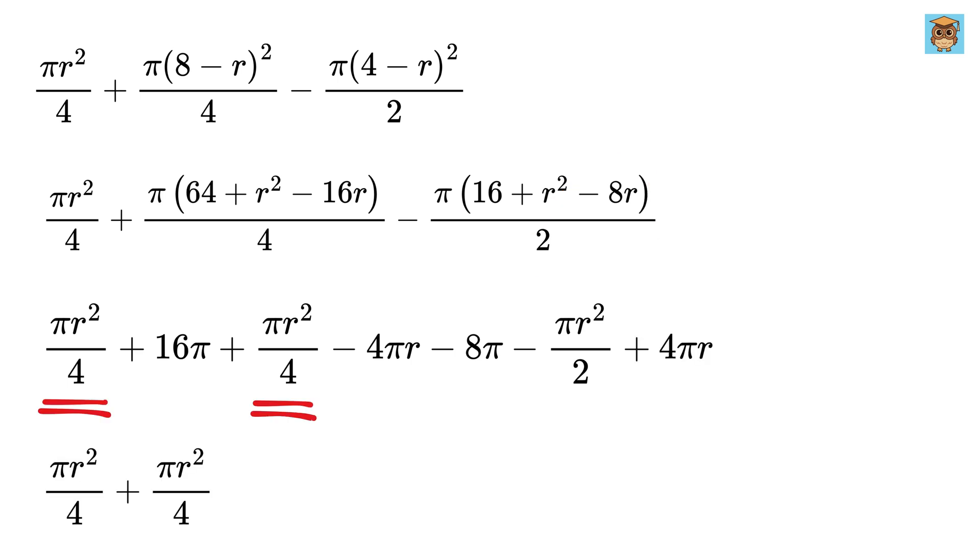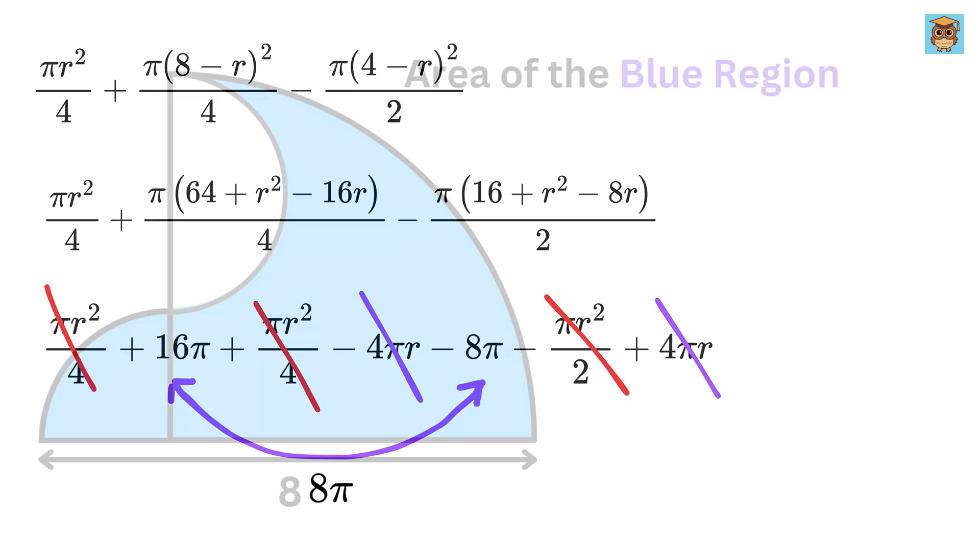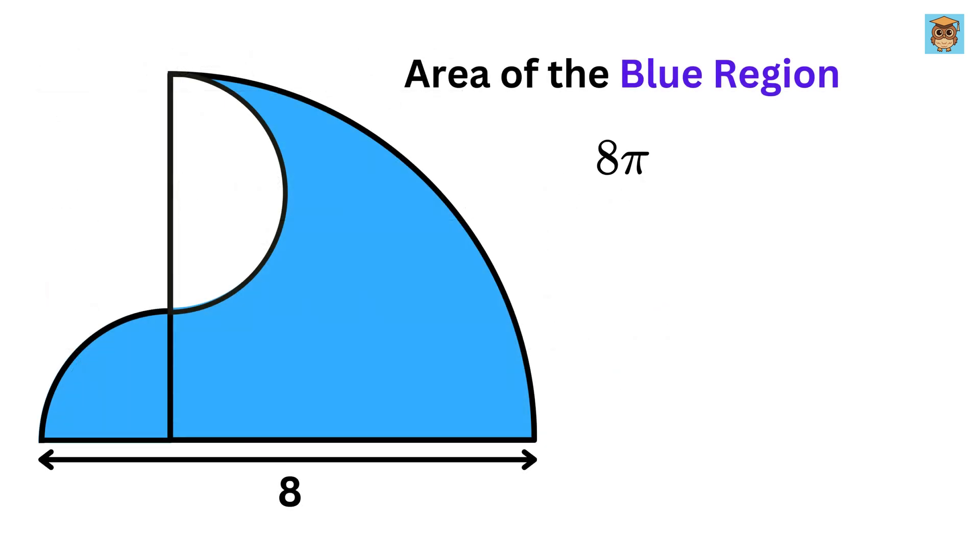Now, look at these two. It will be 2 times pi r square over 4, or pi r square over 2. And this gets cancelled with this one. Now, this minus 4 pi r will be cancelled with this one. And this minus this will become 8 pi. And that's it. This is our final answer.